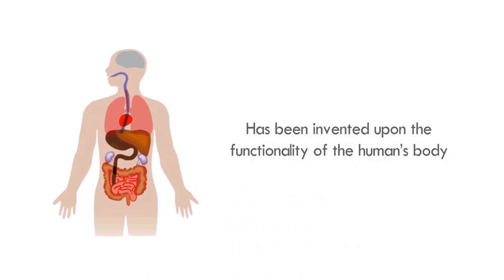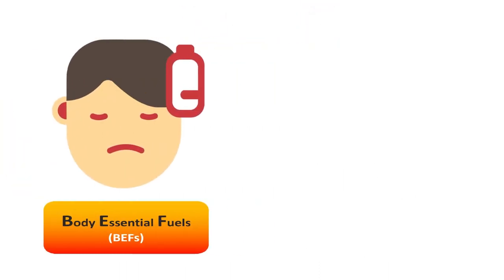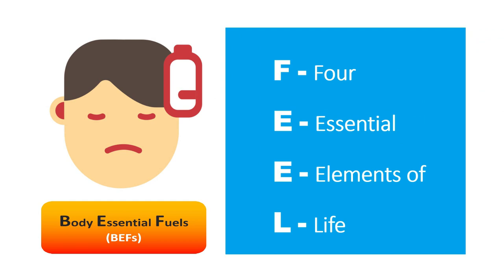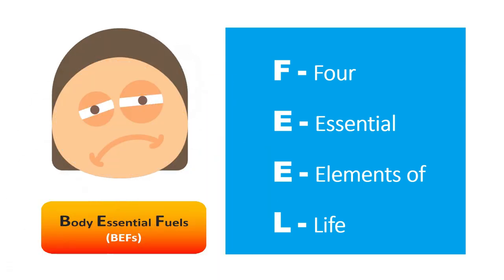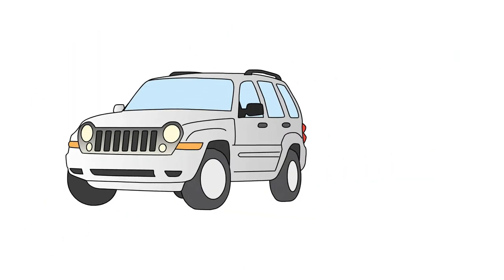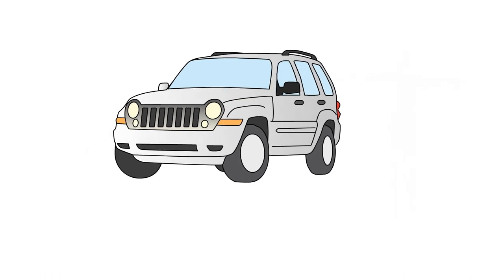This is how the human body functions. Vehicles have been invented upon the functionality of the human's body, not vice versa. Thus, in the occurrence where there is any depletion of the body's essential fuels, namely the Four Essential Elements of Life, the entire organism of the human body would start malfunctioning, gradually collapse, and progressively worsen.